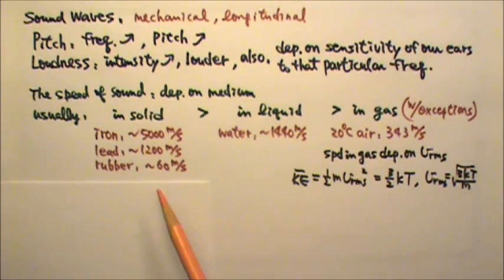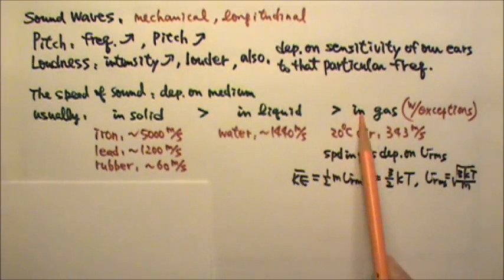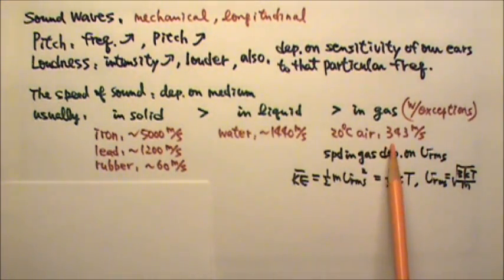You don't need to memorize any of these speeds for the AP exam. However, I do ask my students to memorize the speed of sound in air at 20 degrees Celsius, the 343 meters per second.